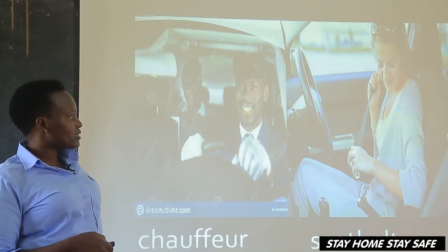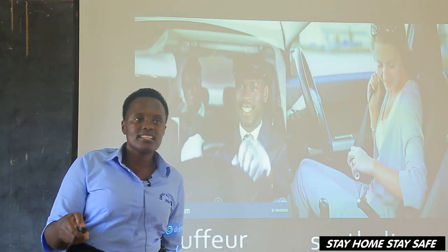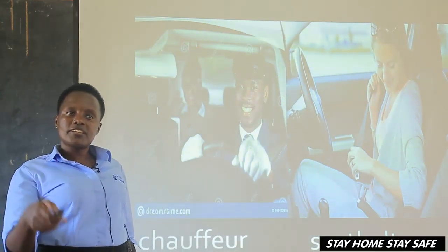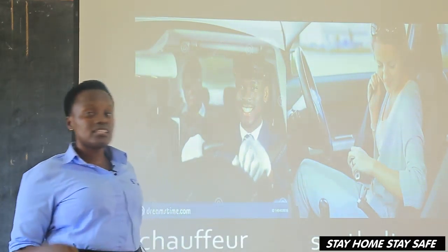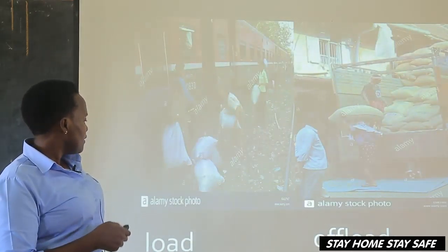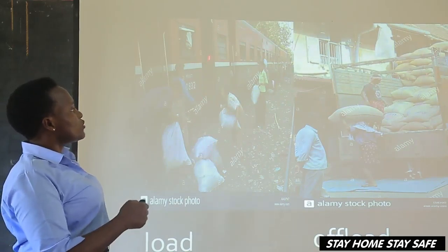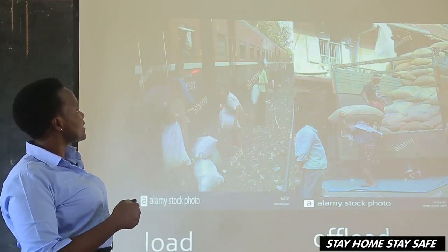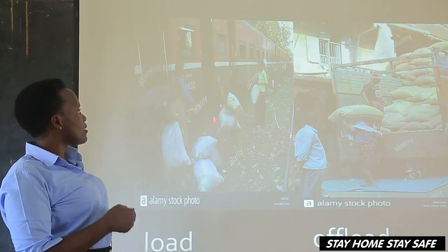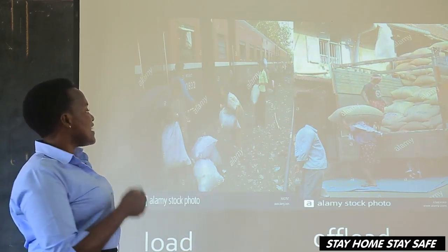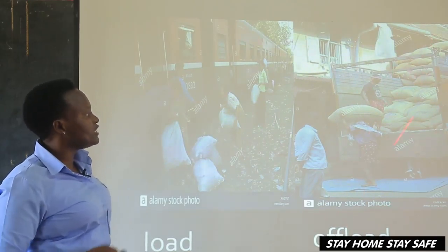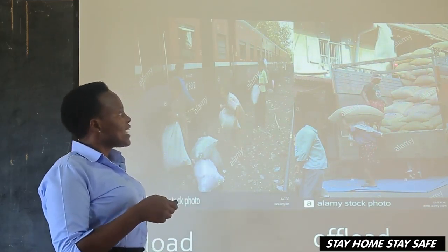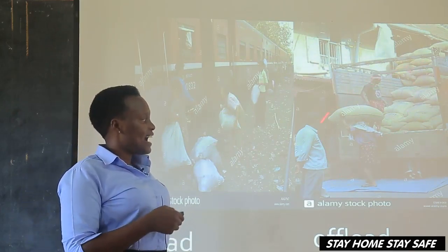Then we have a seatbelt. It is advisable that all passengers should fasten their seatbelts immediately they sit in the vehicle. Then, 'load' — to load a vehicle means to put the luggage in a vehicle. You can see they are loading the train with luggage. Then, 'offload' — to offload means to remove the goods from a vehicle. They are offloading a lorry.